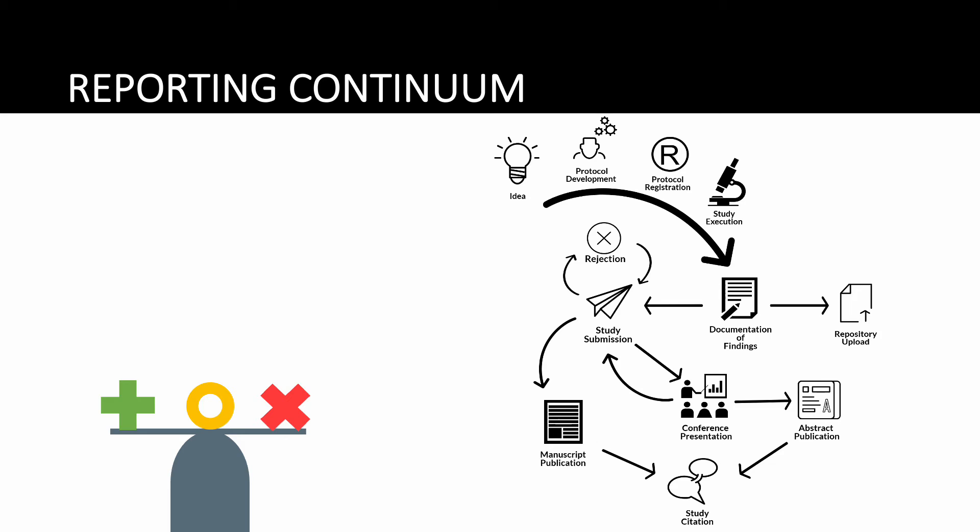Let's start with some background. The reporting of scientific research is a multi-step process ranging from planning and protocol development to submission of an abstract or manuscript to conferences or journals, followed by the possibility of citation and synthesis in reviews or guidelines.